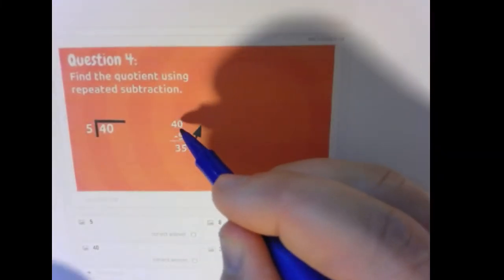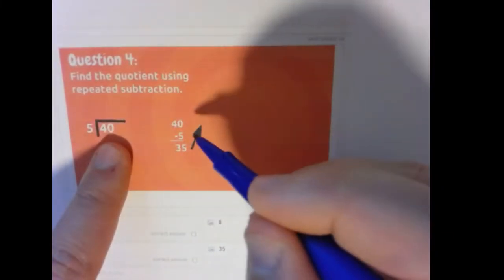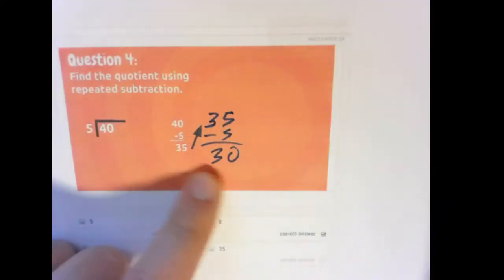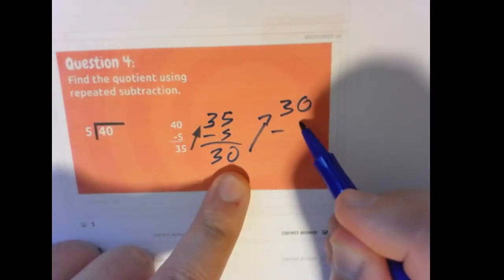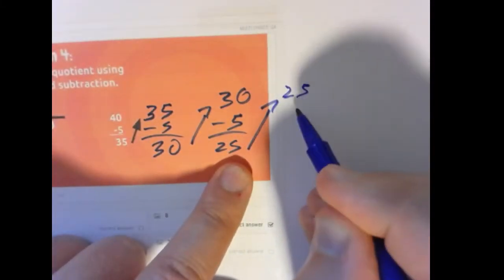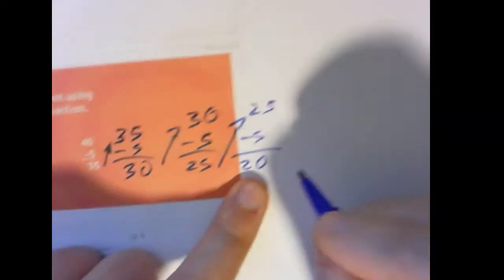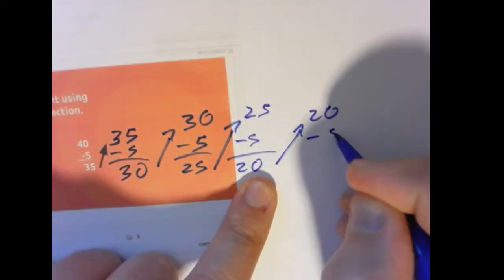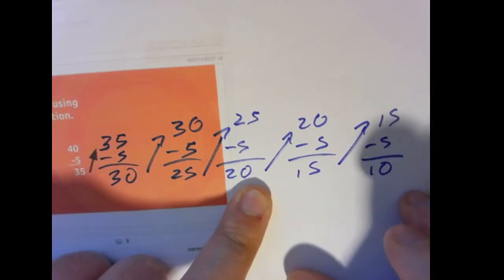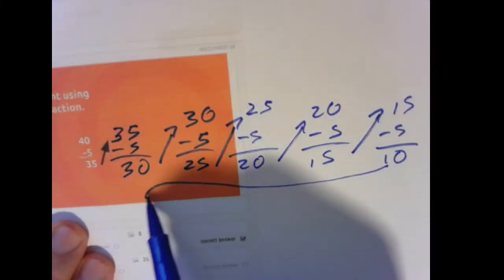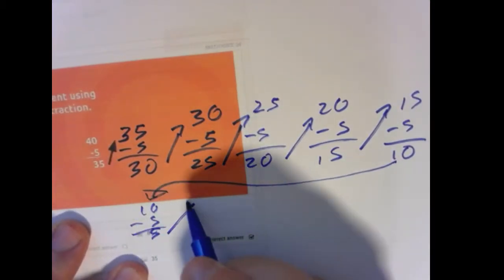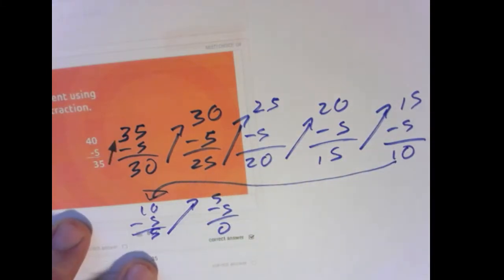Let's try that again. 40 divided by 5. So using our repeated subtraction. 40 minus 5 is 35. 35 minus 5 is 30. 30 minus 5 is 25. 25 minus 5 is 15. 15 minus 5 is 10. Let's bring this over here. 10 minus 5 is 5. Bring that up. 5 minus 5 is 0.